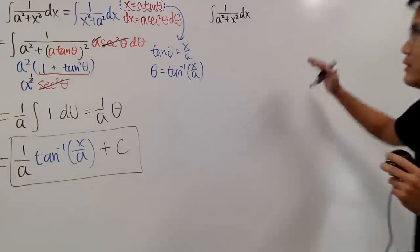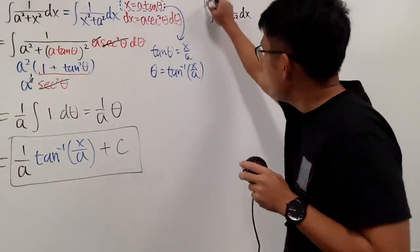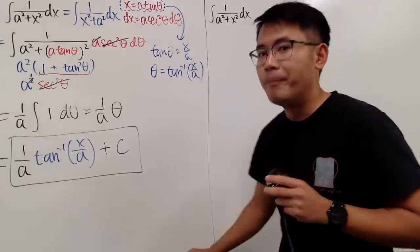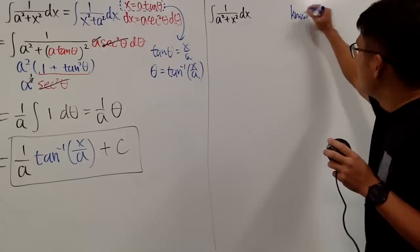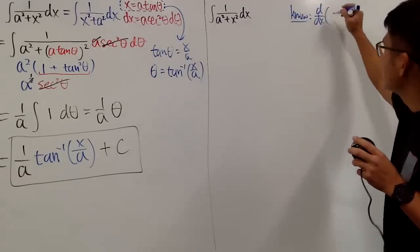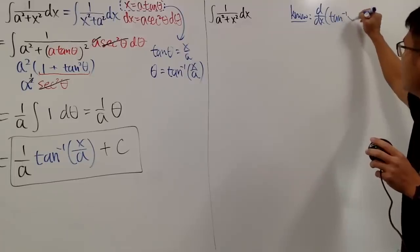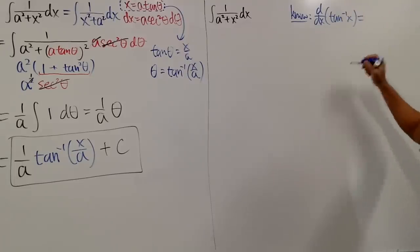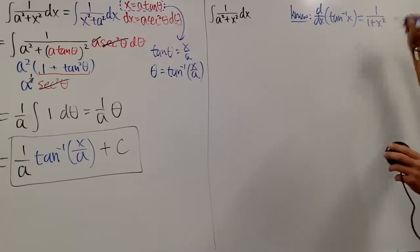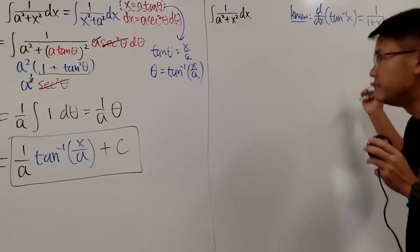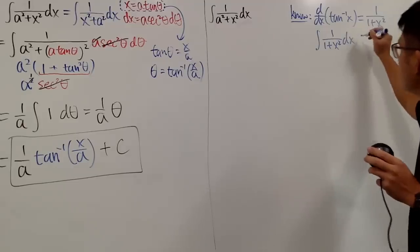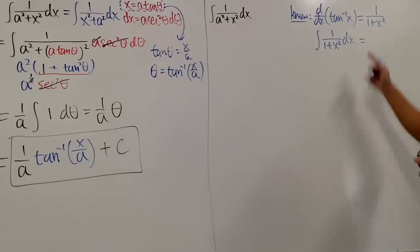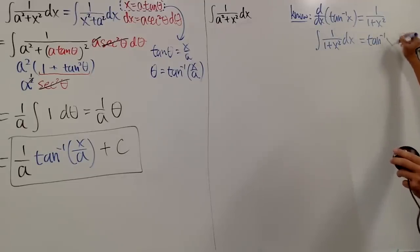Let's look at another way to do it. For the second way, I'll utilize the fact that we know the derivative of inverse tangent. Back in Calc 1, we know the derivative of inverse tangent of x gives 1 over 1 plus x squared. And once we know this fact, we know the integral of 1 over 1 plus x squared dx equals the inverse tangent of x, plus C.